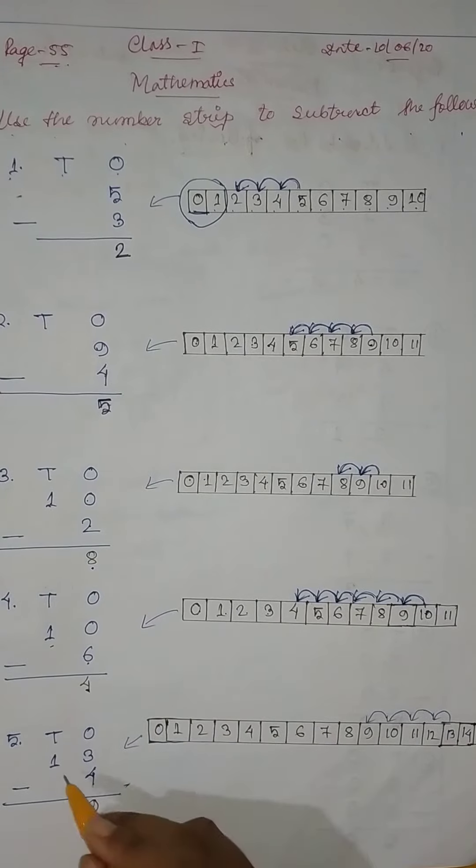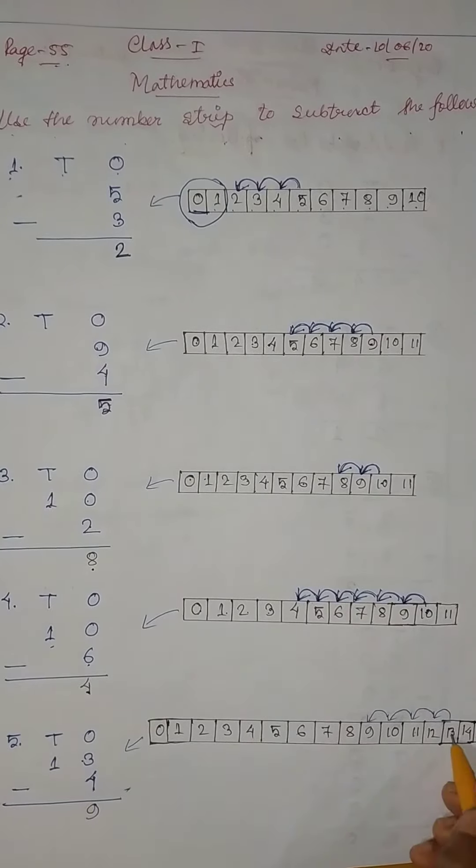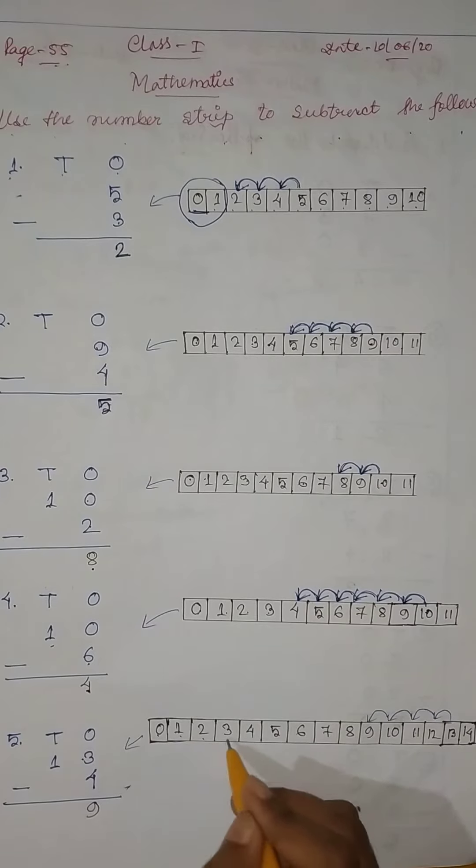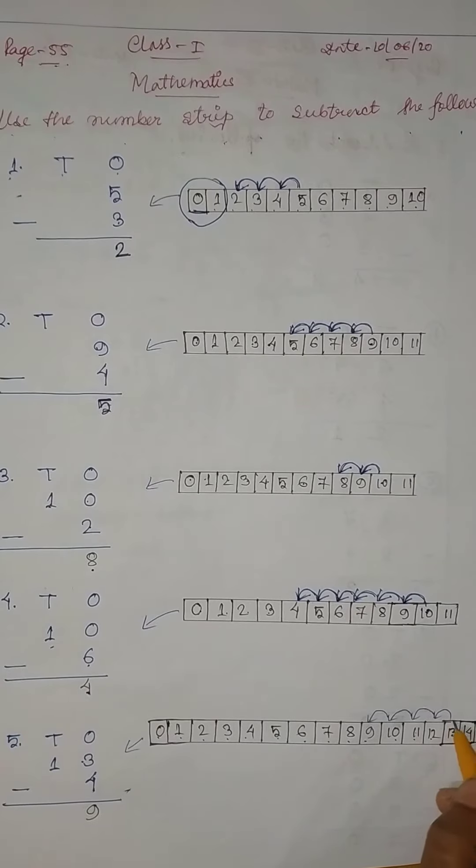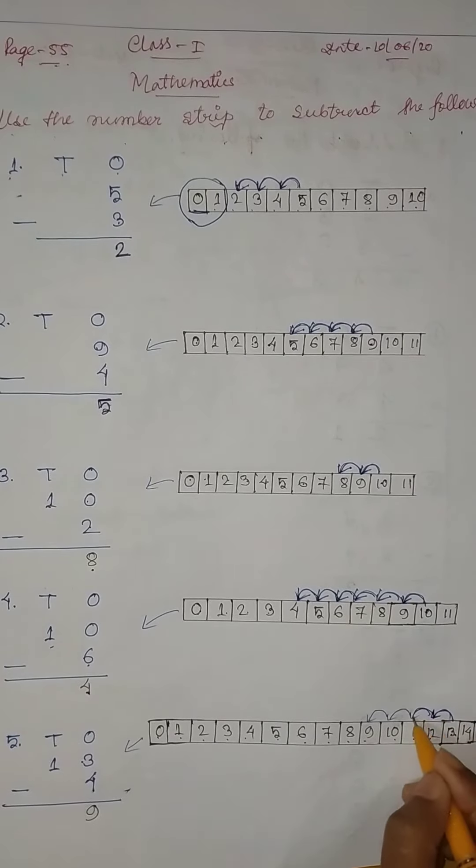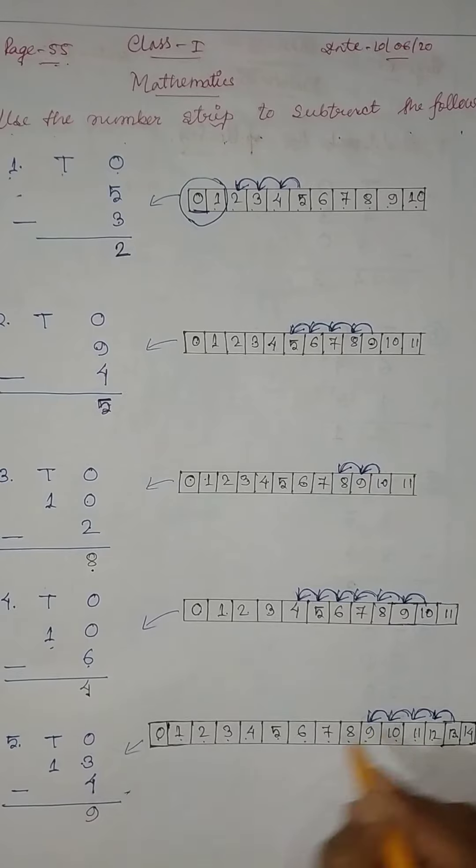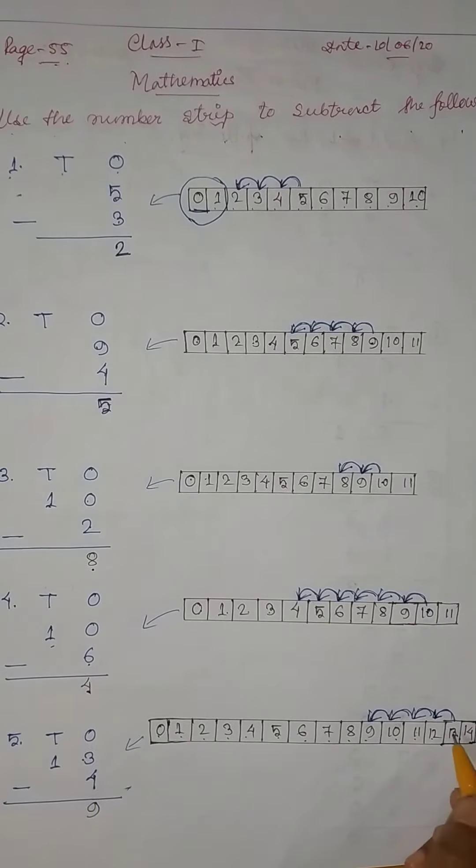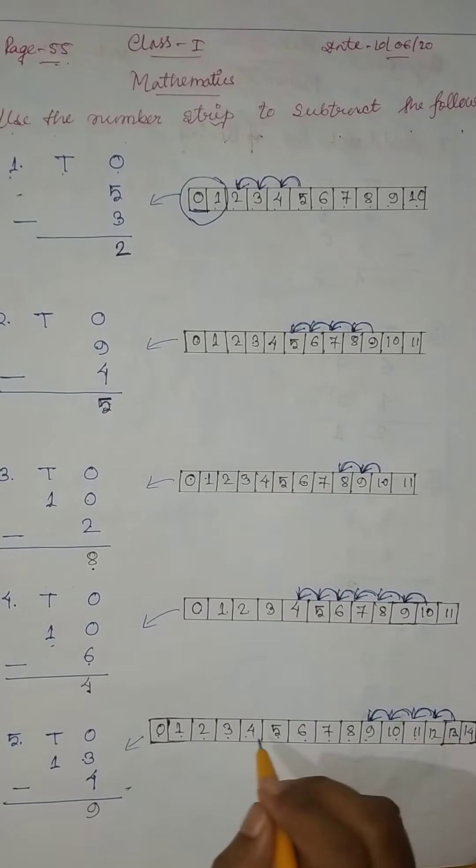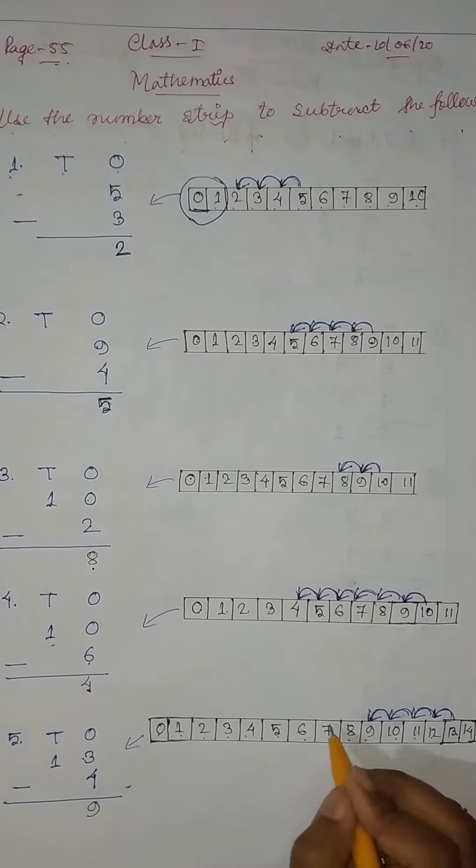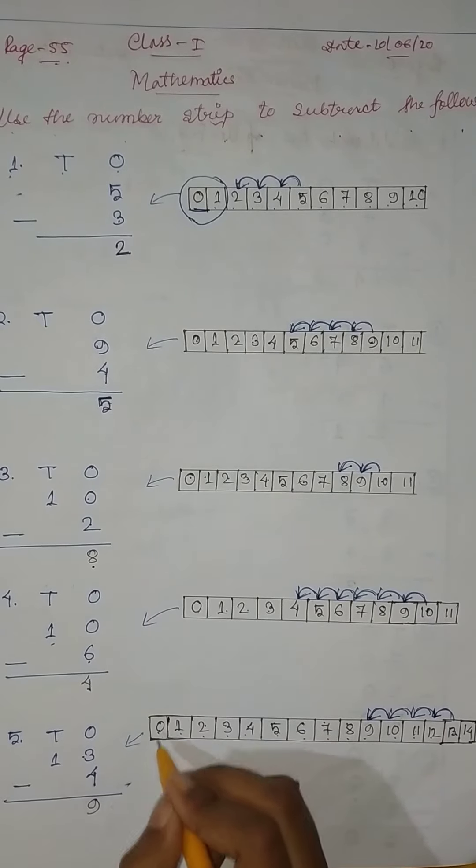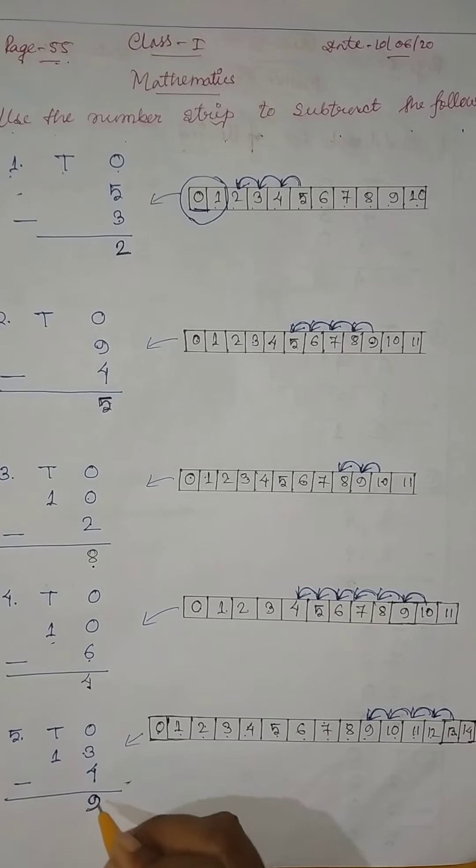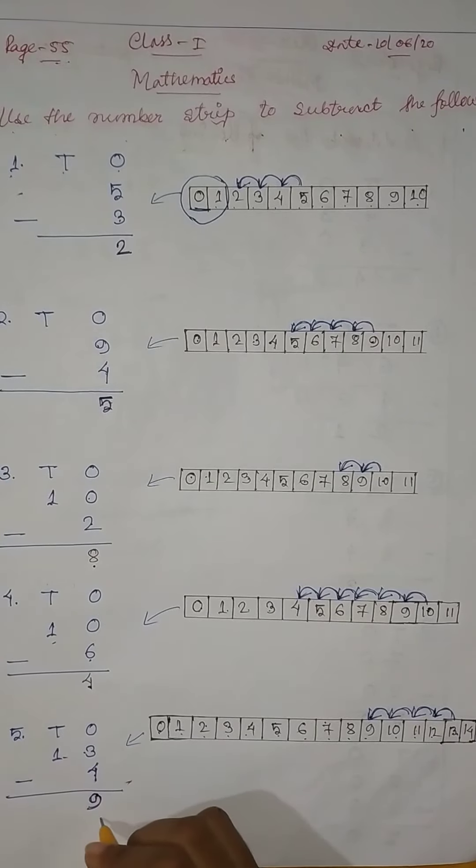And then, 13 minus 4. 13. 0, 1, 2, 3, 4, 5, 6, 7, 8, 9, 10, 11, 12, 13. 1, 2, 3, 4. 13 minus 4. So here, 1, 2, 3, 4. And then, how many left? 1, 2, 3, 4, 5, 6, 7, 8, 9. So here, 9. So 13 minus 4 equal to 9.